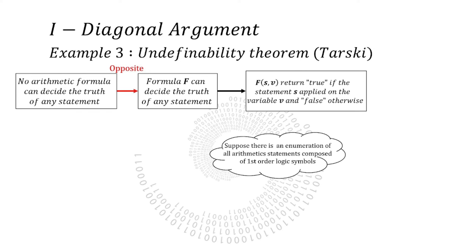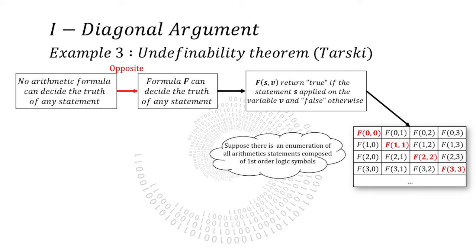So F takes two inputs. S is the index of the statement we want to know the truth. And V is the index of the variable on which the statement S depends. Then F returns the truth value of the statement S applied on variable V.